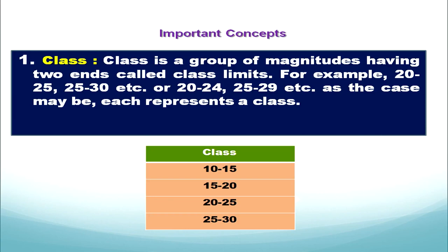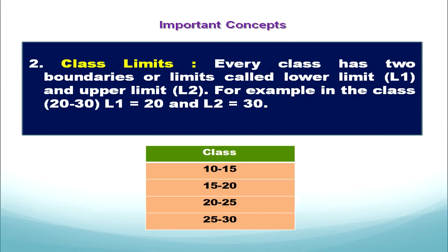These concepts are going to help us understand frequency distribution better. The very first concept is 'class.' What is a class? A class is a group of magnitudes having two ends called class limits. For example, class one is 10 to 15, and the next class is 15 to 20. In both cases we have got two ends.